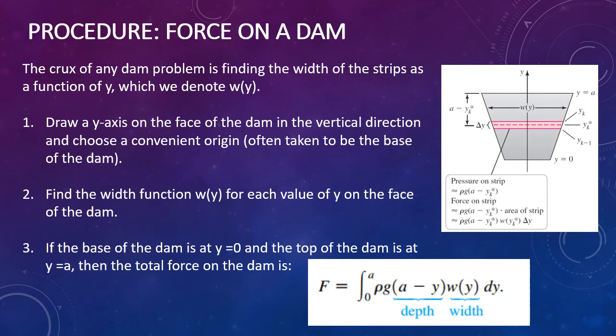For finding the force on a dam, draw a y-axis on the face of the dam in the vertical direction, often with the origin at the base. Find the width function w(y) at each value of y on the face. If the base of the dam is at y equals 0 and the top at y equals a, then the total force is F equals the integral from 0 to a of rho times g times (a minus y) times w(y) dy.